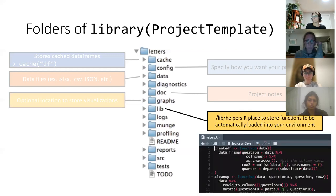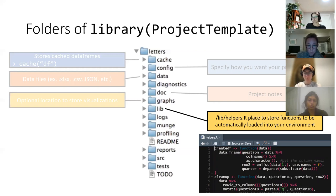Lib is another really awesome folder. It has a helpers R file inside of it and it's a place to store functions that you can use to automatically load into your environment. For example, this is a function I wrote for cleaning up really messy survey data, and I wanted to be able to refer to it every single time I loaded the project. I have probably five or six different functions inside this folder and they'll all just be readily available — it's almost like having your own little package.